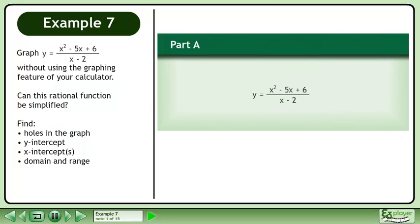Graph y equals x squared minus 5x plus 6 over x minus 2 without using the graphing feature of your calculator. Can this rational function be simplified? Find holes in the graph, the y-intercept, x-intercepts, and the domain and range.